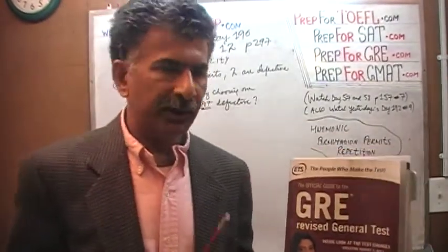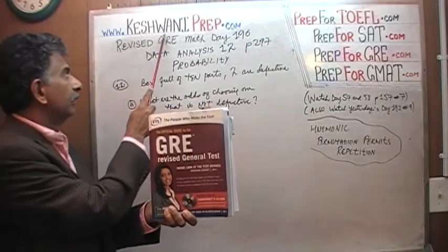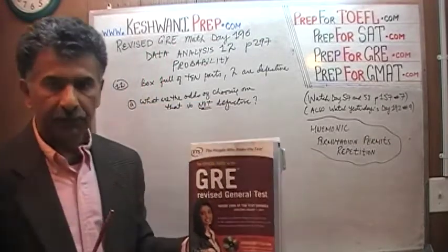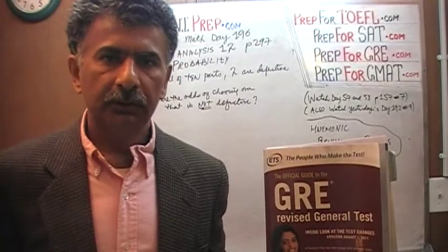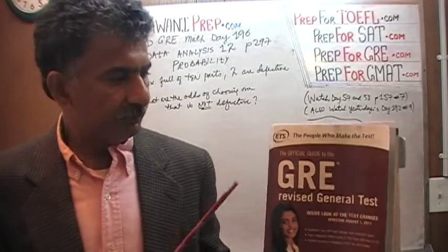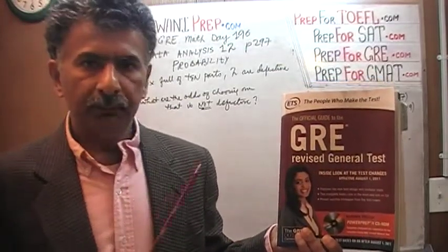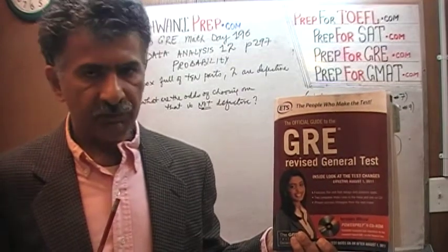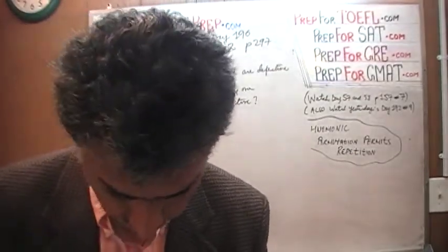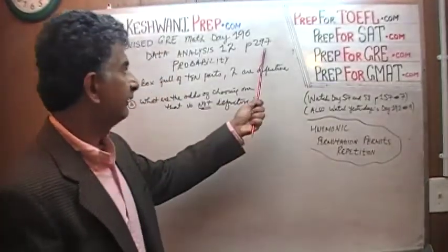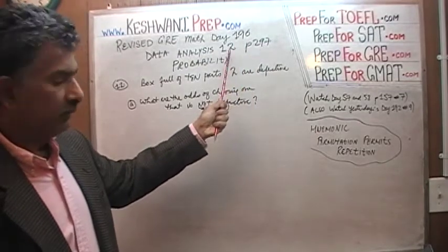Hello, my name is Keshwani. We are here because we want to prepare for the GRE. We have been solving GRE math problems out of this book here — the official guide to the GRE revised general test. If you do not own it already, purchase it immediately. You are going to need it. The problem we are about to solve is on page 297. Today is our lesson number 196, based on page 297, problem number 12.